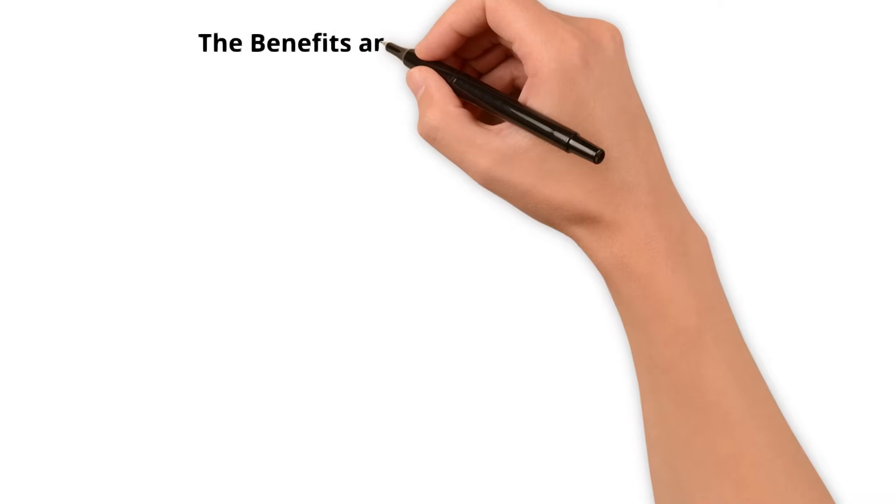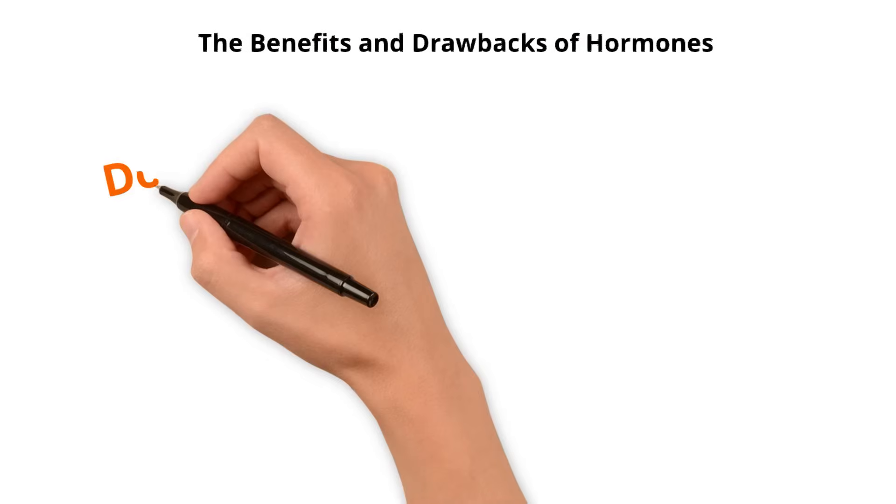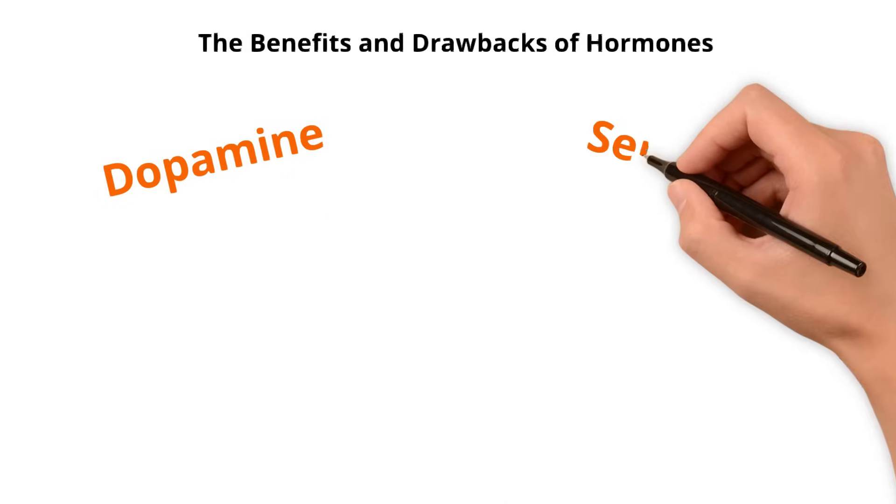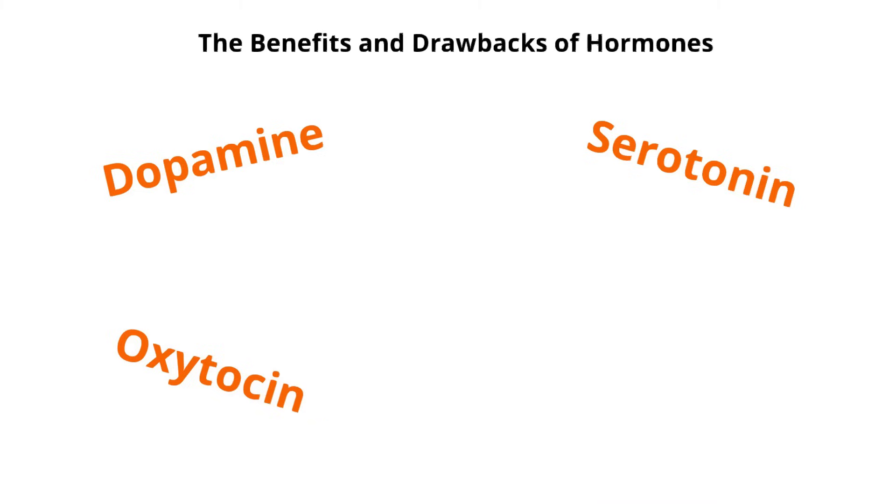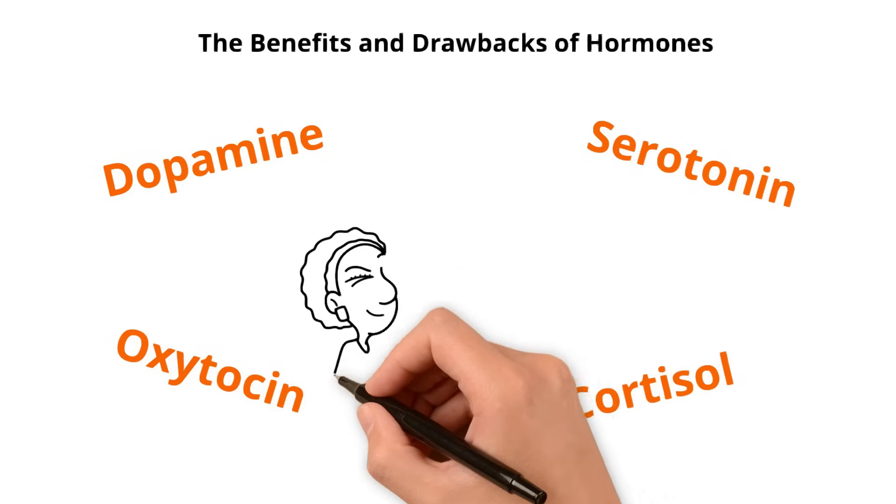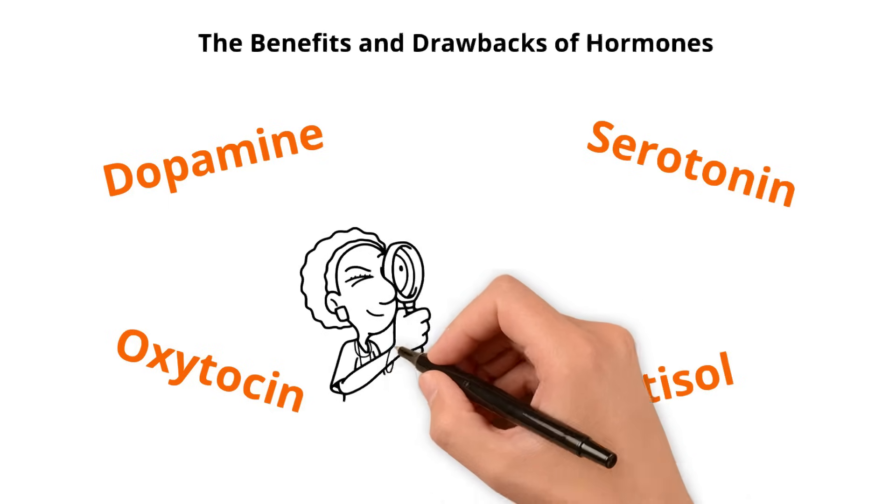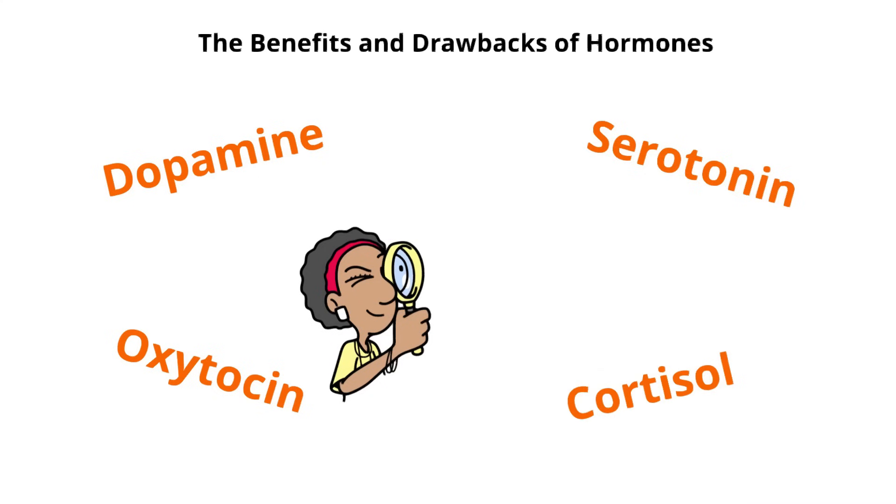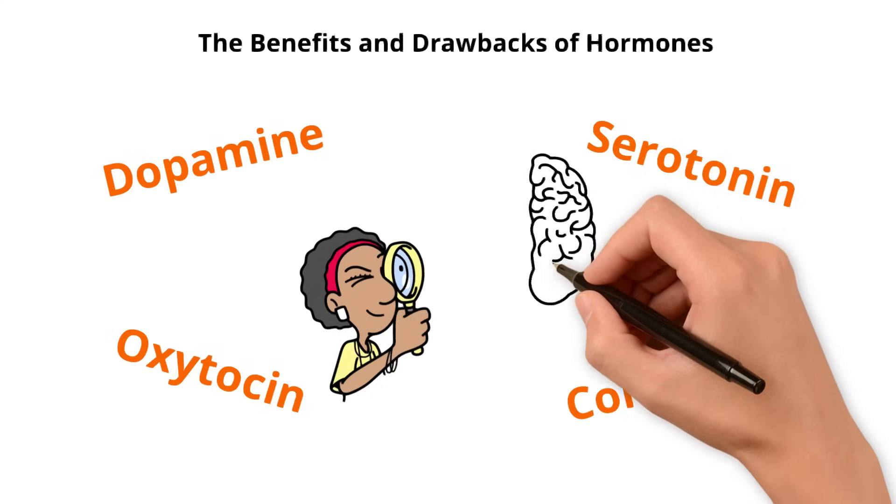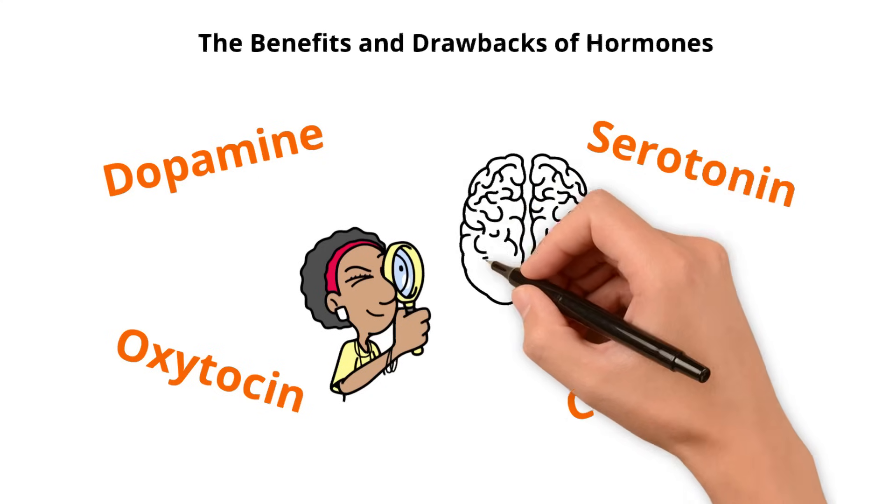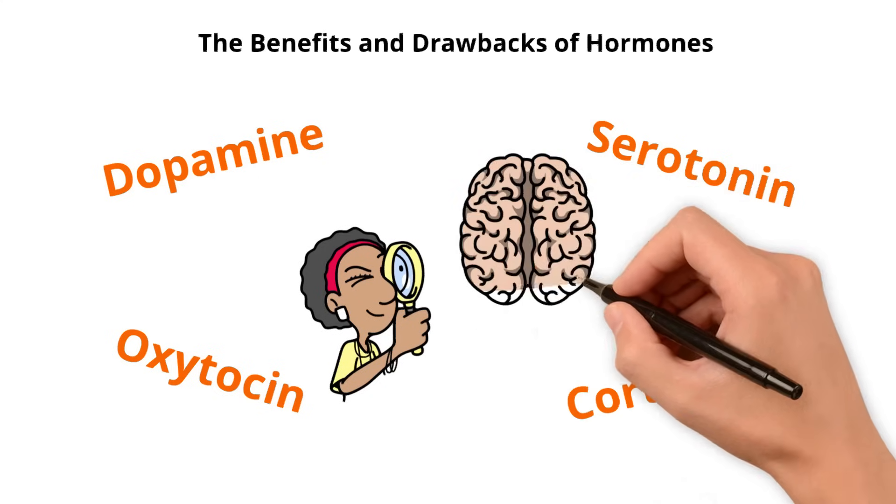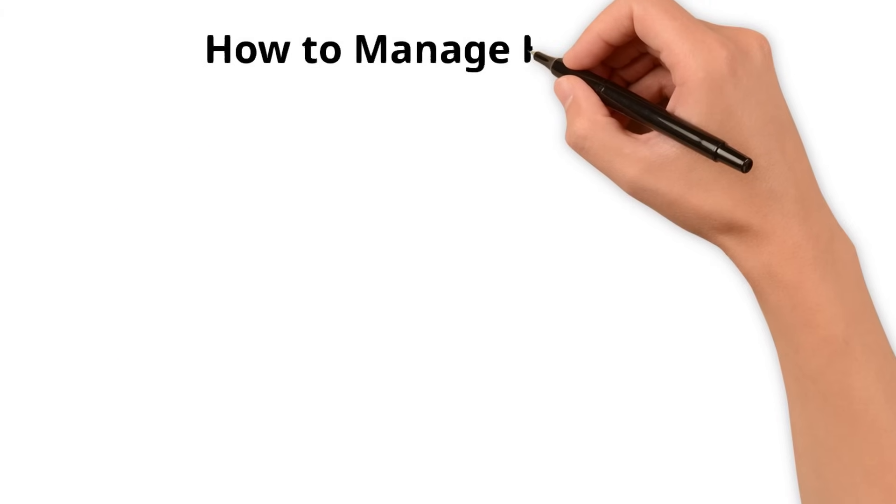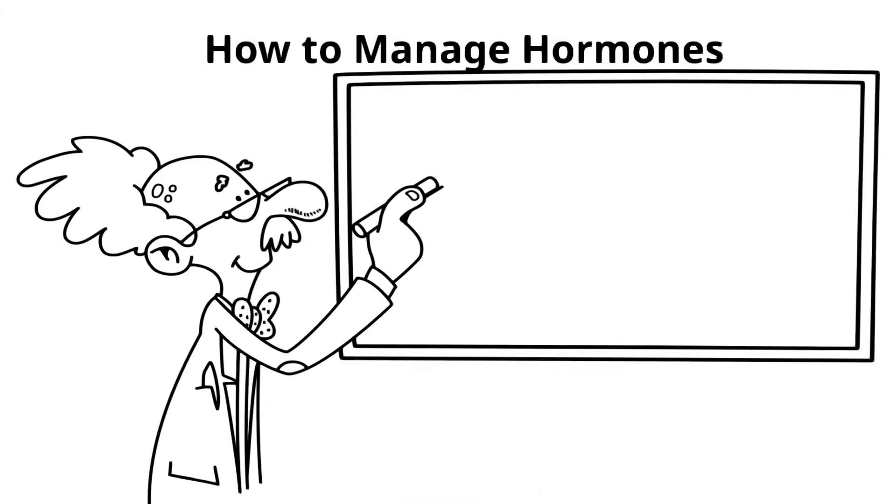The Benefits and Drawbacks of Hormones. Each of these hormones is beneficial in moderation, but an excess or deficiency can lead to serious problems. For example, high cortisol levels can weaken the immune system, while low serotonin levels can cause insomnia. That's why it's essential to understand how to manage your emotional state and maintain hormonal balance.